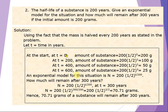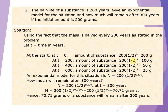Problem number two: The half-life of a substance is 200 years. Give an exponential model for the situation, and how much will remain after 300 years if the initial amount is 200 grams. Using the fact that the mass halves every 200 years: at t equals zero, the amount of substance equals the initial amount times (1/2) raised to zero, which is simply 200 grams.